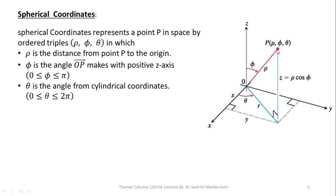Spherical coordinates represent a point P in space by the ordered triplets (ρ, φ, θ) in which ρ is the distance of the point from the origin.